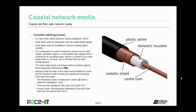Coax is one of the oldest Ethernet cabling standards. It has been used for baseband, that's carrying a single digital signal, and for broadband, carrying multiple digital signals. The coax cable is composed of a central conductor covered by an insulating layer, which is covered by an outer metal mesh finished with an outer insulating layer. The inner metal mesh or foil layer helps to protect against electromagnetic interference.